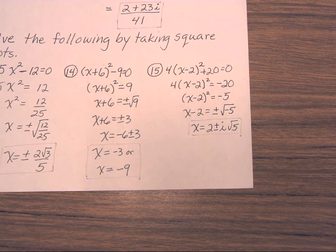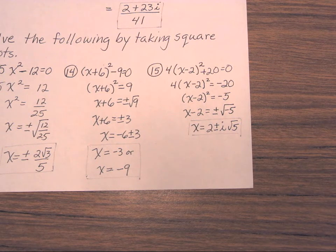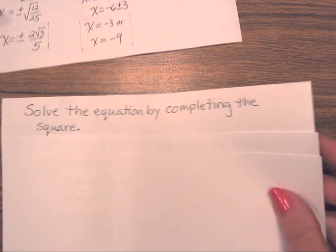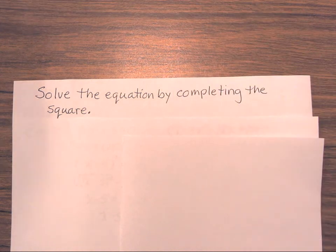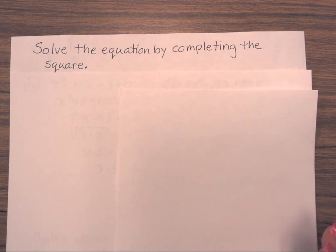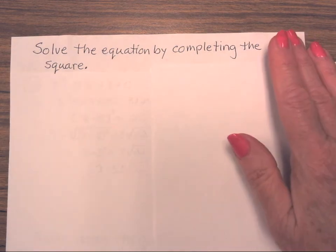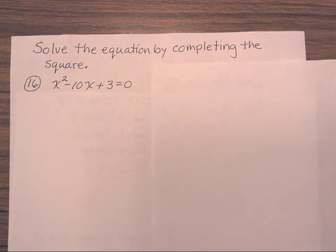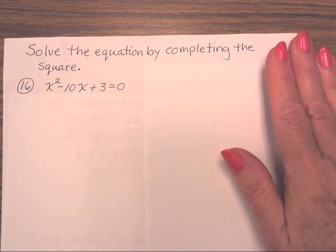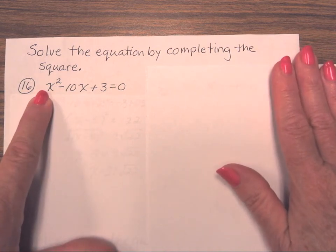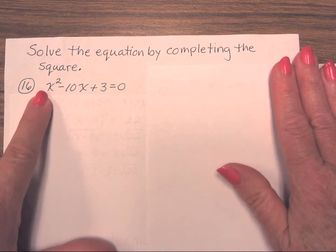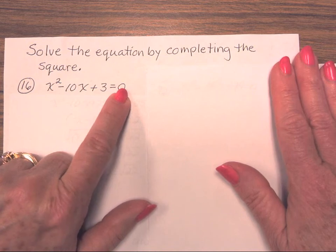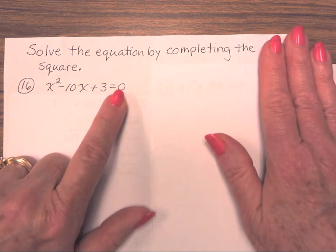Next we are going to solve by completing the square. One of them will have a coefficient on the squared term and one will not — you need to be able to do both. Number 16: x squared minus 10x plus 3 equals 0. When you complete the square, if we had had a coefficient we would have divided by it. We don't have a coefficient, so we move 3 to the other side by subtracting it, giving you negative 3 over here.